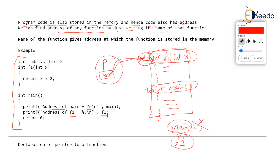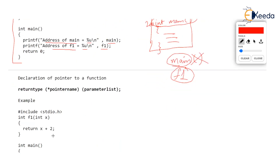Now, how do you declare a pointer to a function? Declaration of the pointer to a function is similar to declaring a function. Remember, whenever you declare a function you have to write the return type — like int, void, float — and the function always has some parameter list. Maybe the function does not have any parameters, but then still you have to write empty brackets. And then between these two, you just write the name of the pointer which you want to declare. But the name of the pointer with the asterisk symbol must be declared in brackets. I'll give you the reason why the pointer should be written in the bracket and what will happen if you don't write bracket.